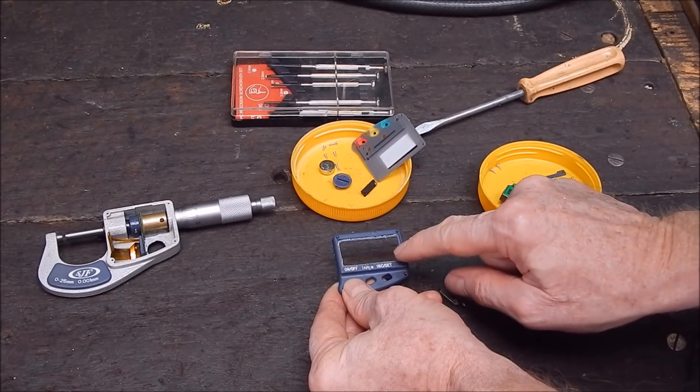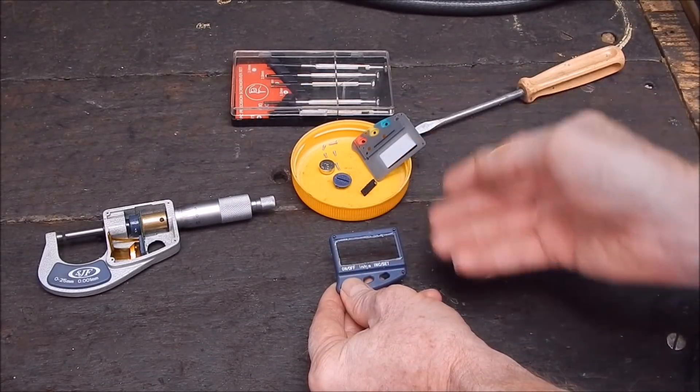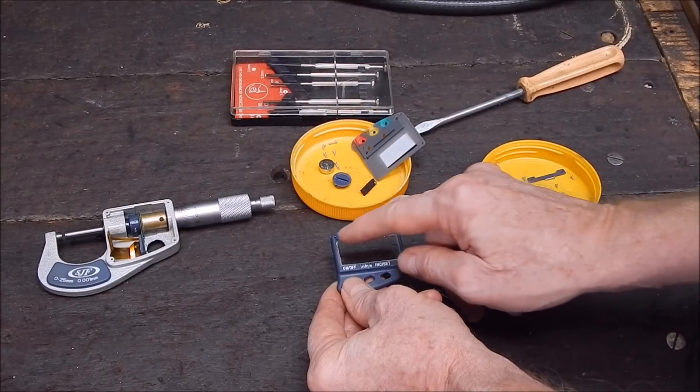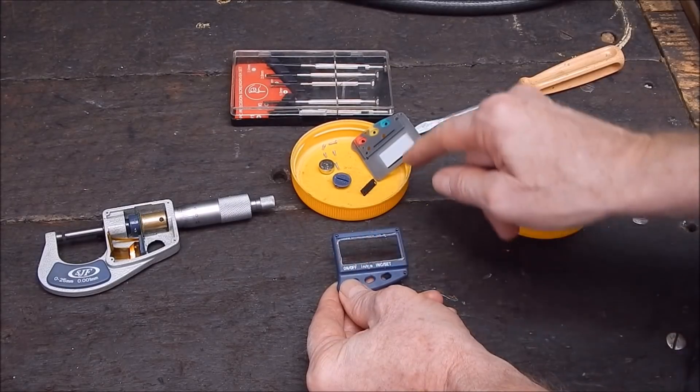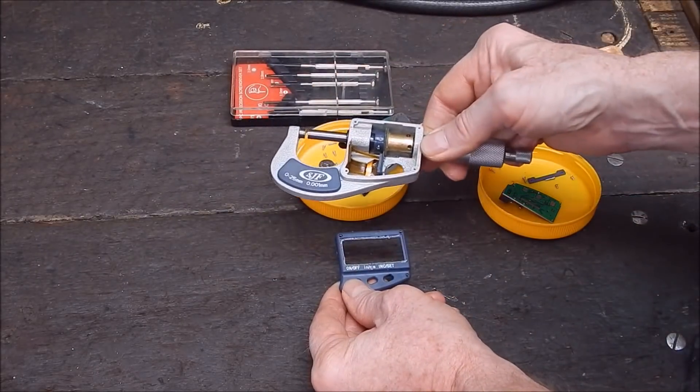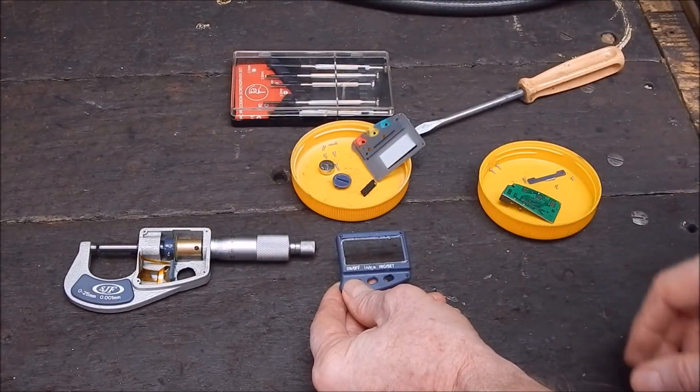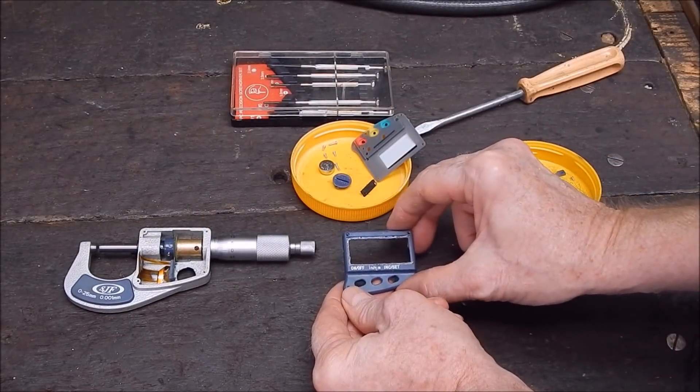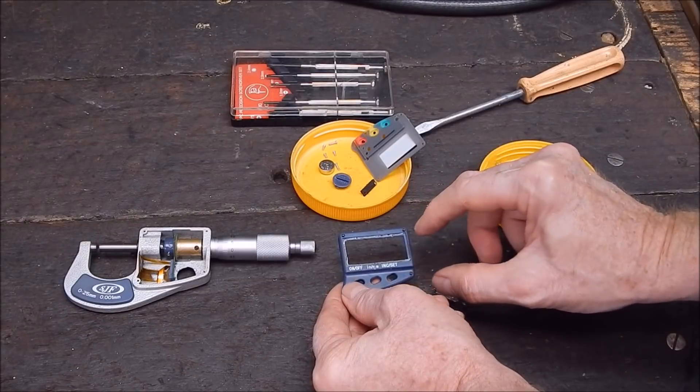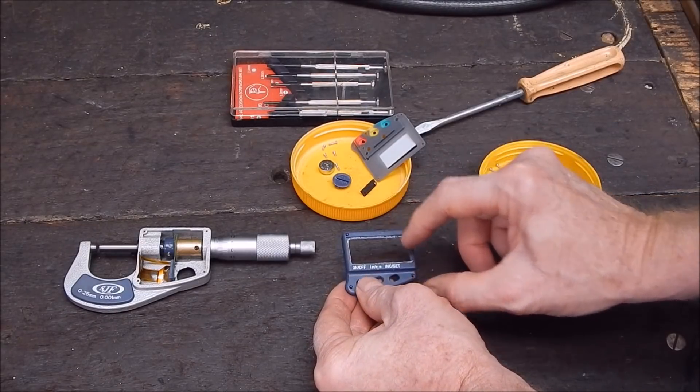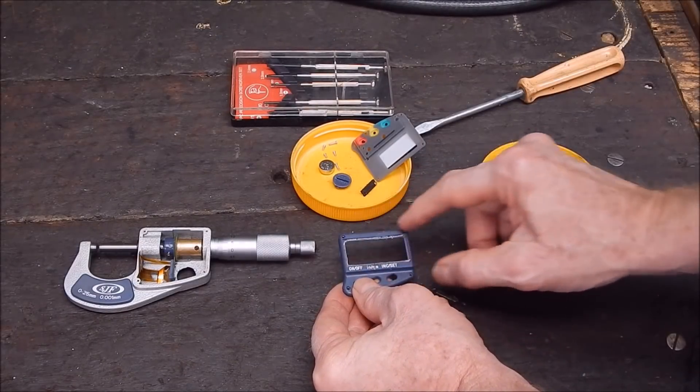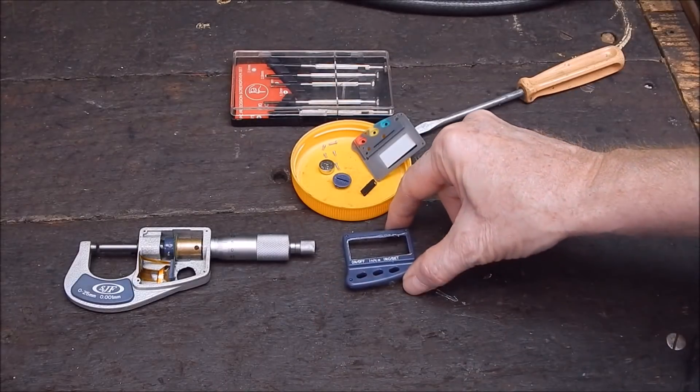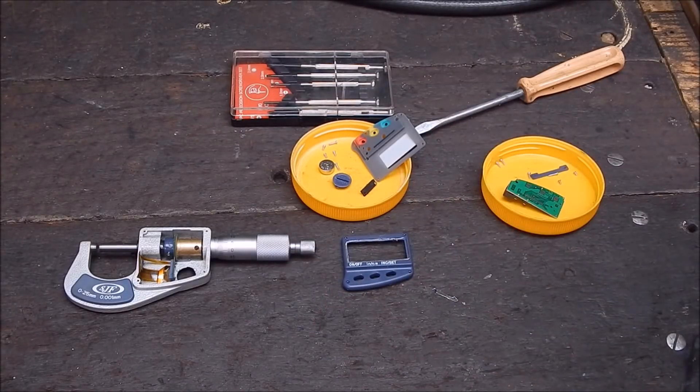You know, that way I'll... You know, if I put it back together and it doesn't work or it's pointless going to all that trouble and I'll just put a cover over the outside and use it as an analogue micrometer. If I can put it back together and it still works, well, then I can just make up a new window and stick it in with a bit of glue. That's the plan.